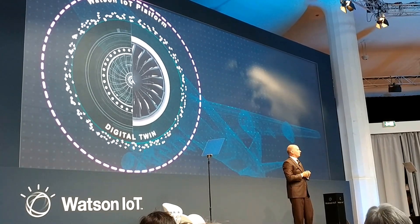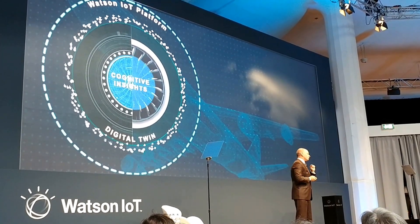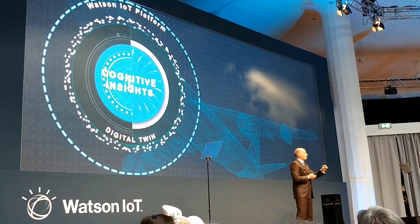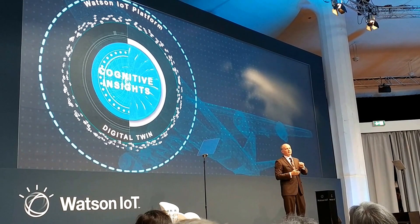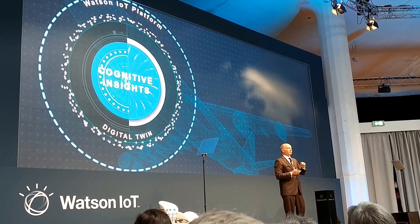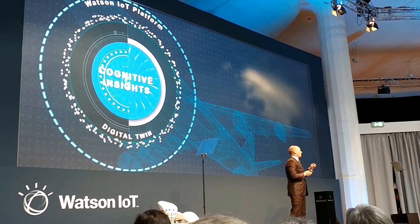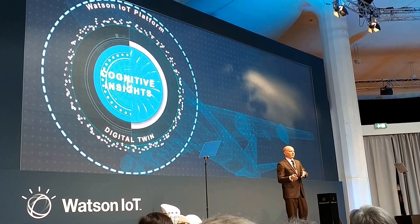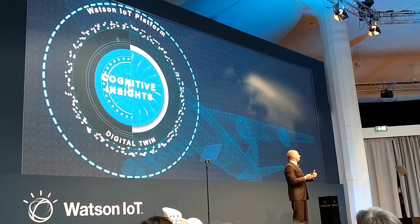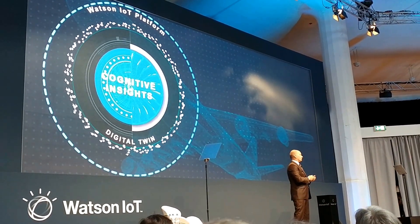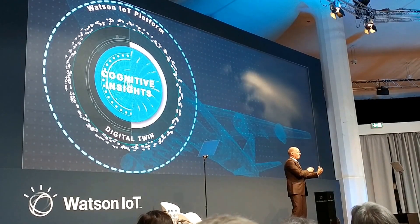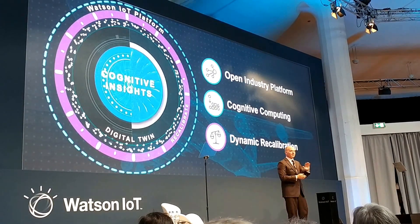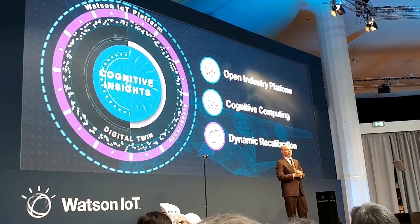We collect and collapse the information, then second, we apply cognitive insights. We operate on the data to understand its variances, tolerances, and how it's used. We apply techniques in machine-to-machine learning, natural language processing, video, acoustical analytics, and more to understand the dynamics of the information. When you have the information and cognition acting on it, the third and most valuable step is that you can dynamically recalibrate your environment.